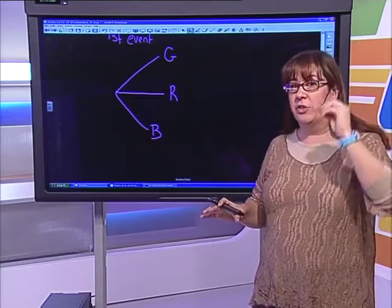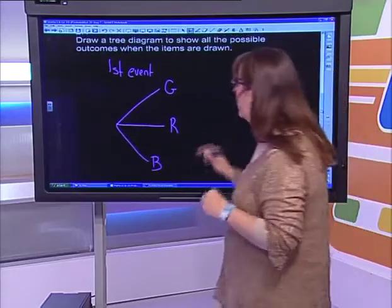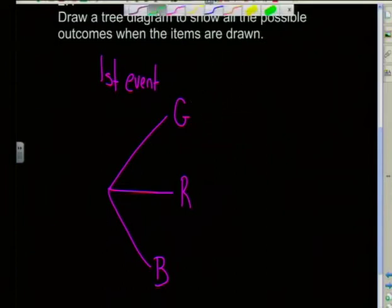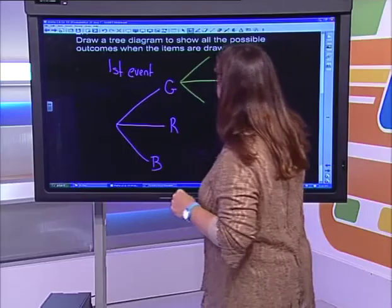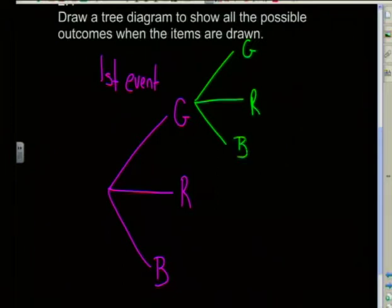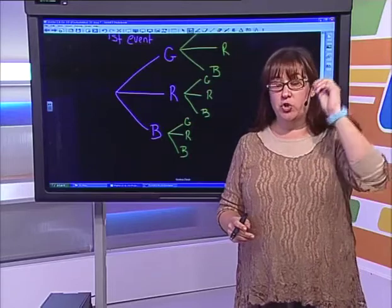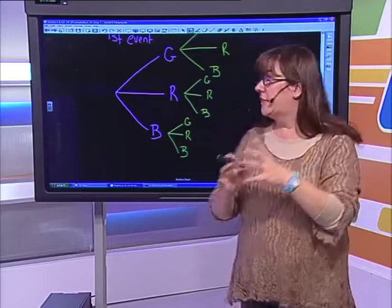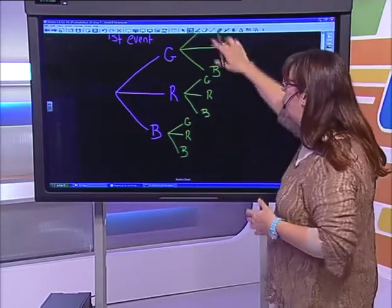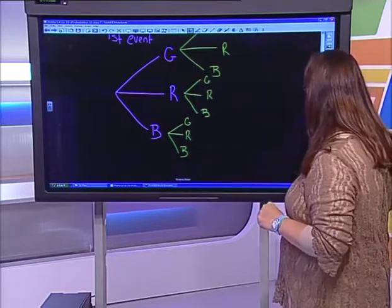I've got three outcomes and three different colors for the second event. If I choose a green marble, I can still choose a green cube, a red cube, or a blue cube. If I choose a red marble, I can have all three outcomes: green, red, and blue. And if I get a blue marble, I can still have green, red, and blue. For each branch of the tree you need to allocate all the different outcomes.